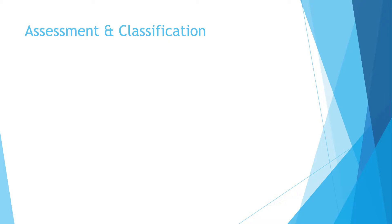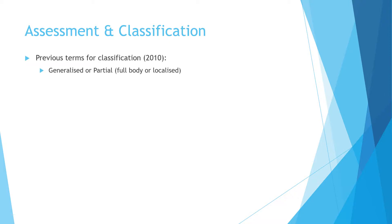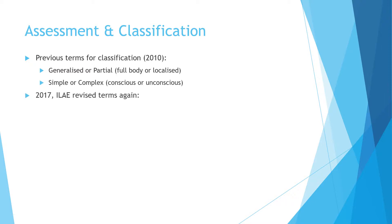Seizure classification has changed over the years. In 2010, the phrases 'generalised or partial' — referring to the amount of the body impacted — and 'simple or complex' — referring to the level of consciousness — replaced the older grand mal and petit mal terms coined in the 1980s. However, in 2017, the International League Against Epilepsy Commission on the Classification and Terminology of Epilepsy revised the terms again.